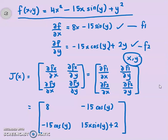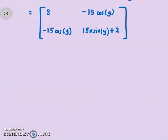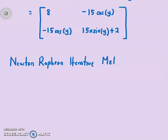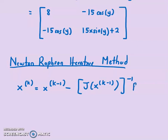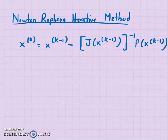Now why is this Jacobian matrix important? Because we want to solve a system of non-linear equations using the Newton-Raphson iterative method. The equation for Newton-Raphson is: x(k) = x(k−1) minus the inverse of the Jacobian at x(k−1), multiplied by f(x(k−1)). That is why you need to find the Jacobian first. So if you are ready, let's look at an example of finding the root.